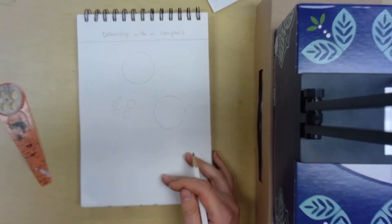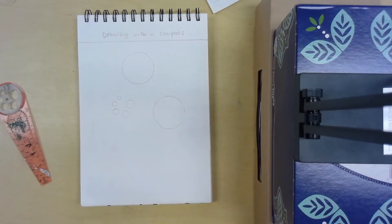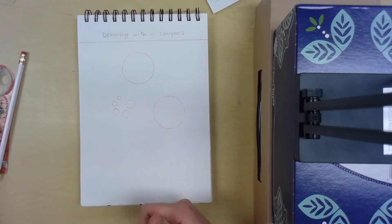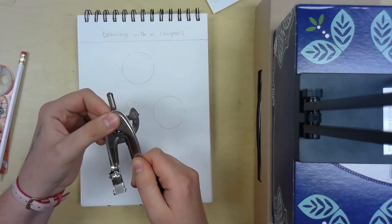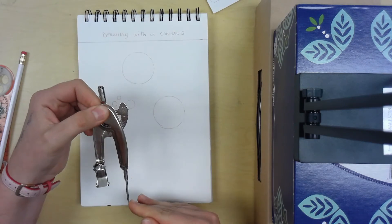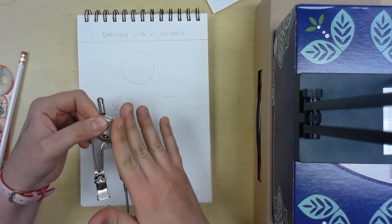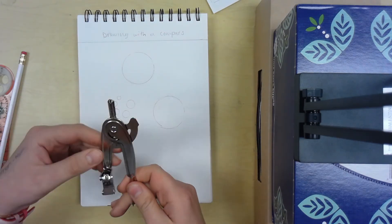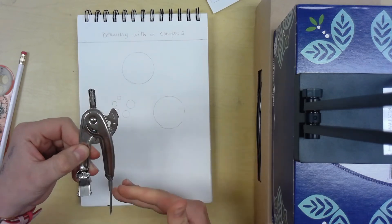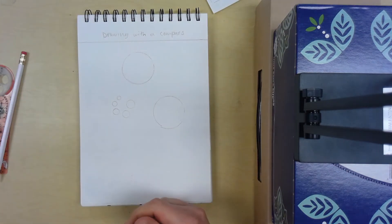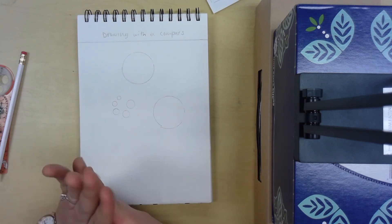This is how you use a compass. It's pretty easy as long as you're holding it right. So hold the compass and spin your paper. Don't spin your compass and hold your paper. Hopefully you learned something from this. Good luck with your compasses.